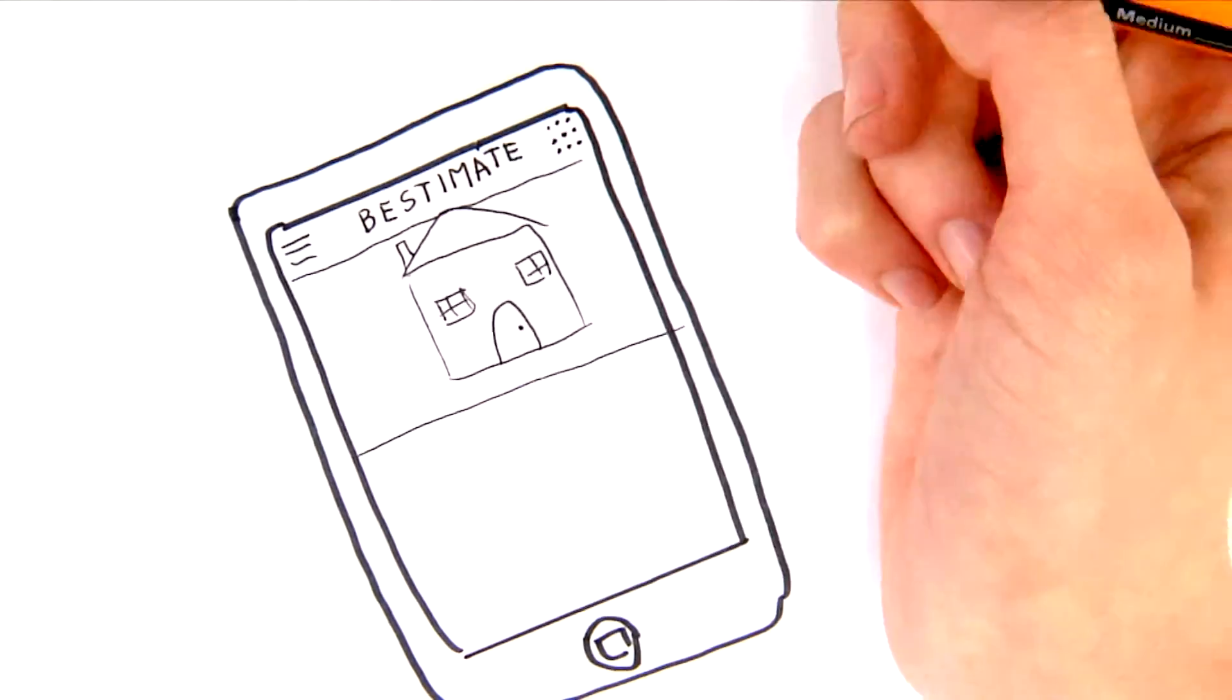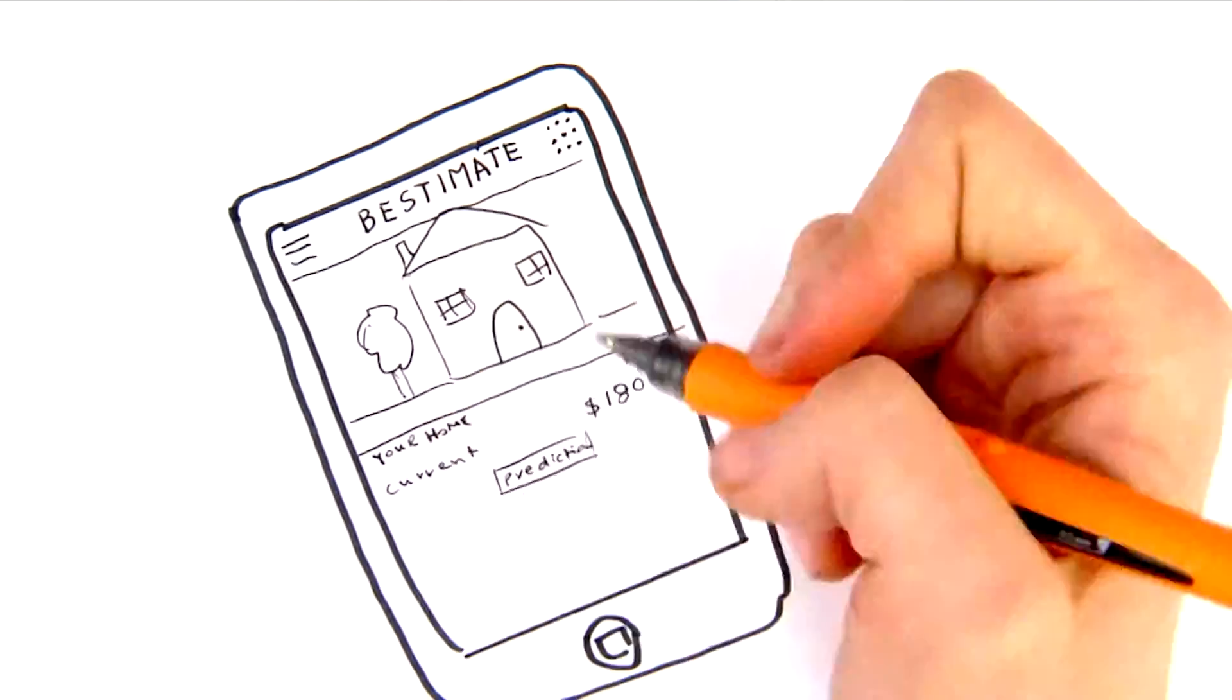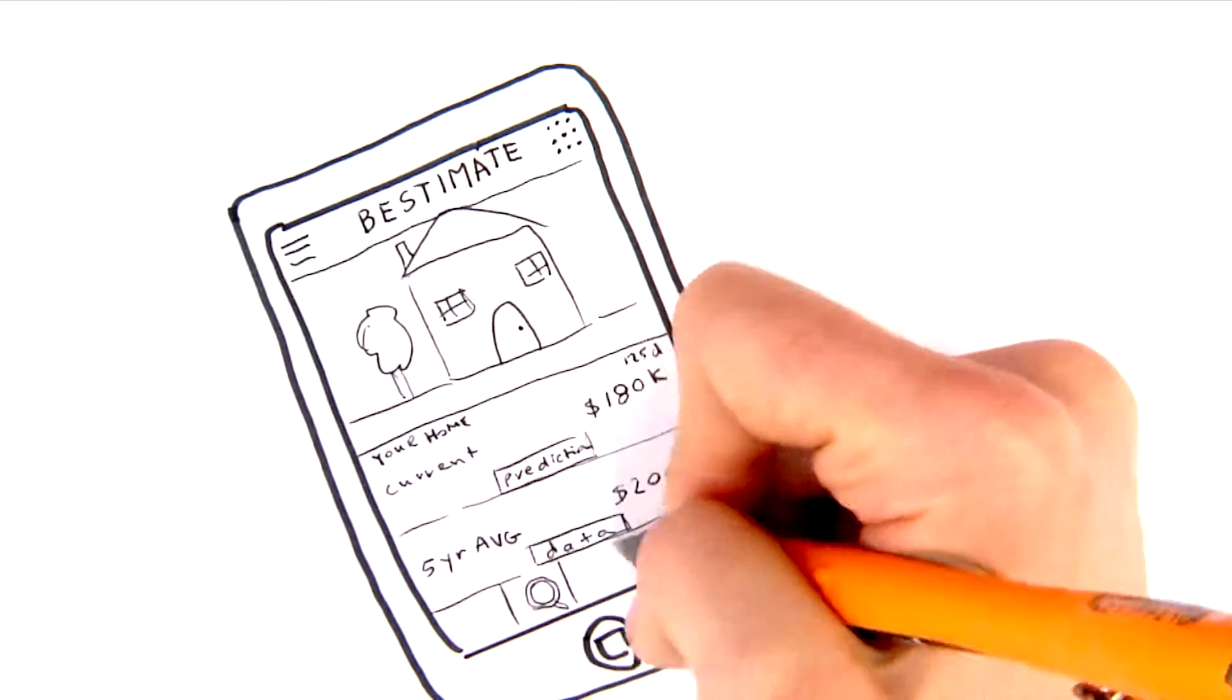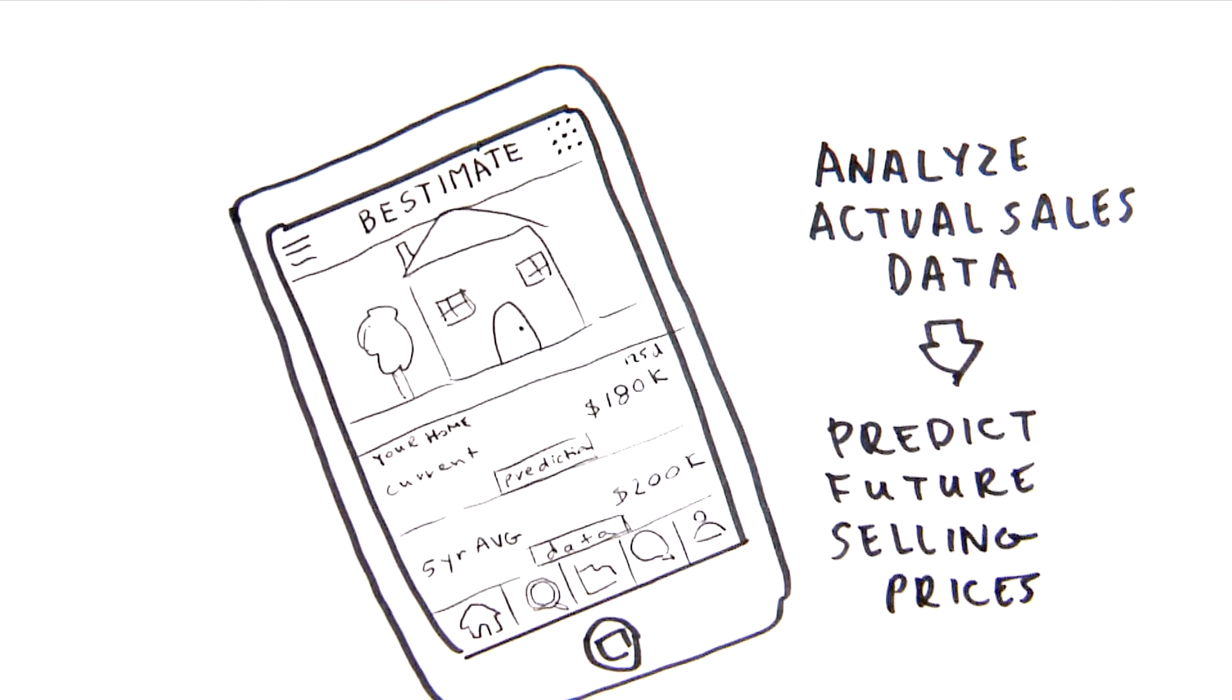Consider how we would build a housing price prediction app, Bestimate. We could fit a model to public data about houses which have already sold and their actual selling price. Then users would use the app to predict the price of their house before selling based on the patterns which were learned.